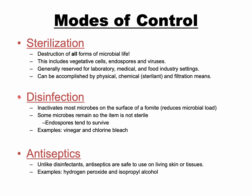Then we have disinfection — reducing the microbial load on the surfaces of fomites for most microbes, but not all forms of microbial life. Endospores tend to survive disinfection. Examples of disinfectants include bleach or vinegar sprayed on your countertops after making dinner. You aren't killing all microbial life, but you're reducing the microbial load.